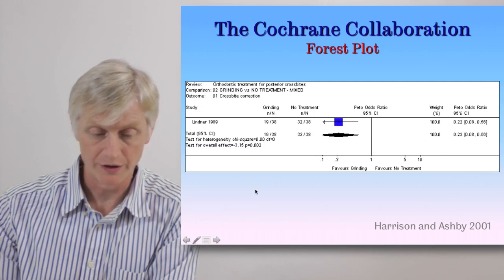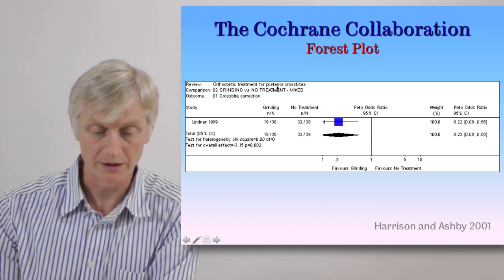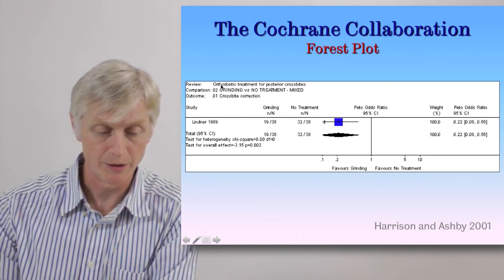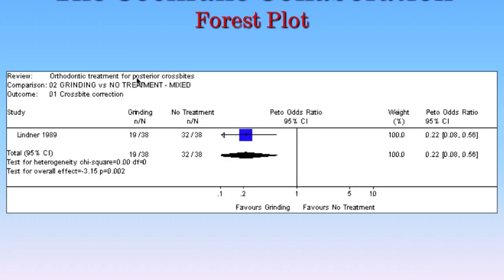Let me show you this forest plot in some detail. If you look at the top here, this is the name of the review: orthodontic treatment for posterior crossbites. One aspect of the review looks at whether the intervention of grinding the teeth in the mixed dentition will lead to the correction of a posterior crossbite in the permanent dentition. The comparison is between those who received grinding and those in the control group who had no treatment.